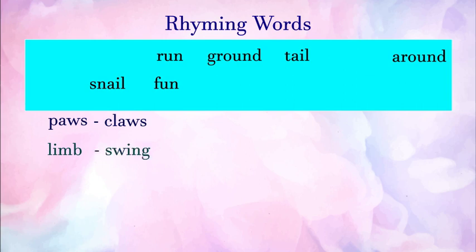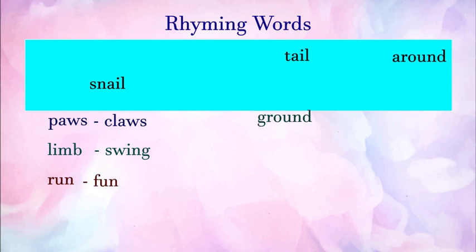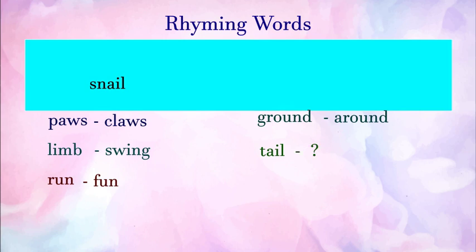'Limb' rhymes with 'swing.' 'Run' — try to find out — 'fun.' Next is 'ground' — ground makes a rhyme with 'around.' And 'tail' — try to find out yourself. So I leave these words for you. Now let's move ahead.